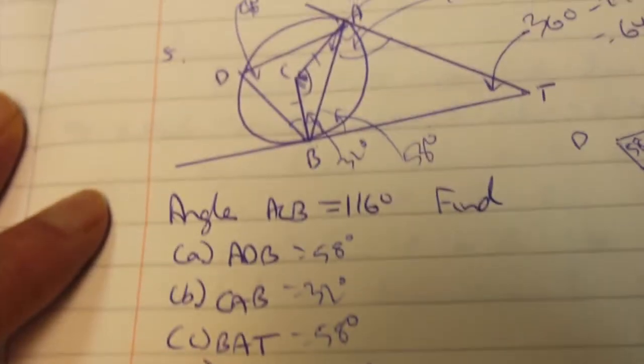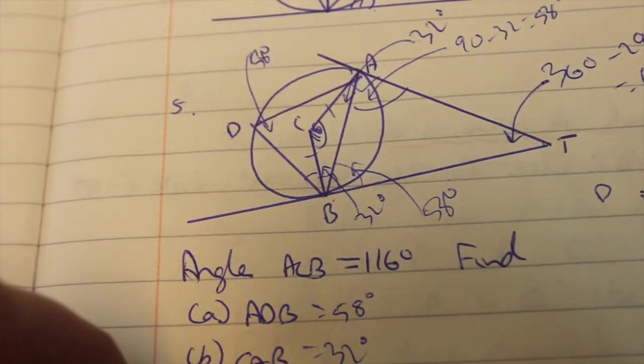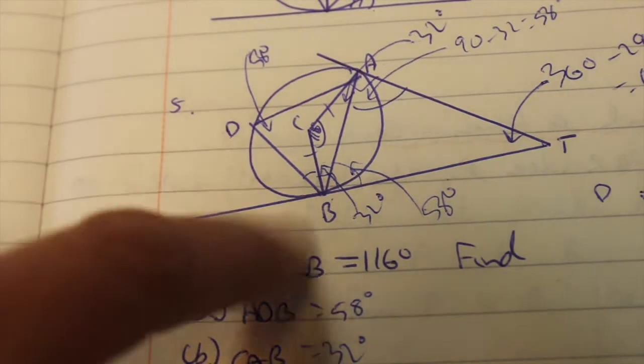To make circle theorems easier if you fill in the angles as soon as you see them rather than reading on through the question tends to make it a little easier.